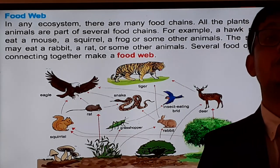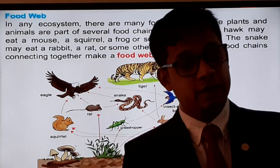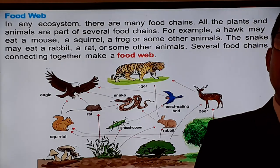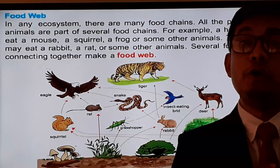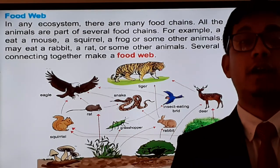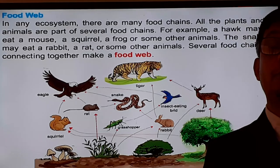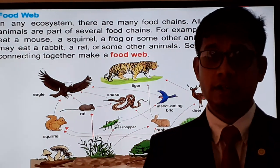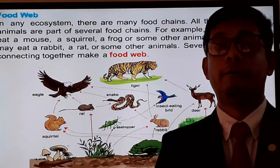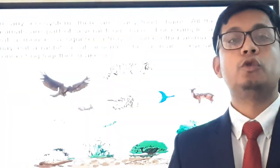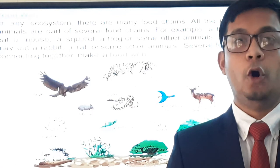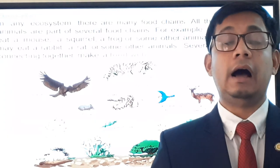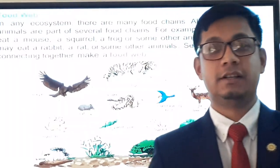Today we learned about our environment: it consists of living things and non-living things. We learned the definitions of living and non-living things, their dependence on each other, and mutual dependence. The important definitions to remember are: habitat, pollination, ecosystem, food chain, and food web — these are most important for your PEC examination. I hope you enjoyed the class. See you in the next class on environmental pollution. Thank you very much, Salamu Alaikum.